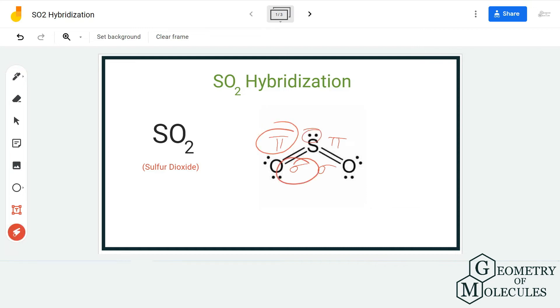That way there will be two sigma bonds, and there is one lone pair of electrons on the sulfur atom, which results in the hybridization number of three, and that corresponds to sp2 hybridization. Another way to find out the hybridization is to find out the steric number.